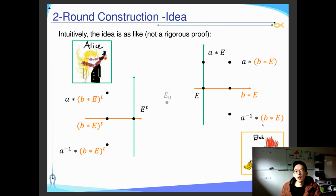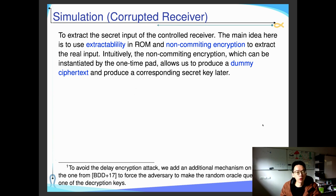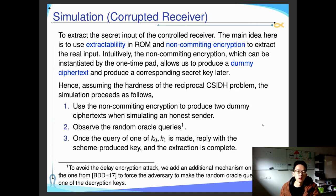But remember that this is not a rigorous proof — it gives intuition for how the cryptosystem works. To achieve UC security, we need to simulate for both the corrupt receiver and corrupt sender. To simulate the corrupt receiver, we use a standard approach using non-committing encryption or one-time pads, produce dummy ciphertexts, and produce the corresponding key later. This adds one additional round, so our final protocol is 3-round instead of 2-round.